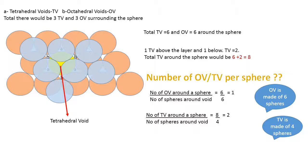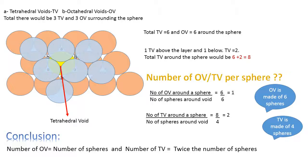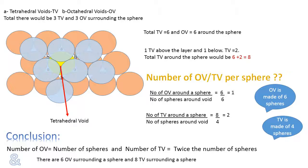We have the number of spheres around the tetrahedral void as 4, giving 8 upon 4, that is 2. By this we can easily conclude that the number of octahedral voids will be the same as the number of spheres, and the number of tetrahedral voids will be twice the number of spheres. And we have one more conclusion: there are 6 octahedral voids surrounding a sphere and 8 tetrahedral voids surrounding the concerned sphere.